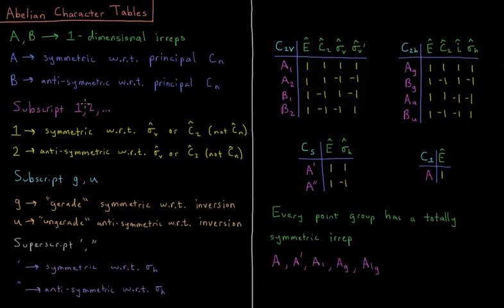If there's a subscript 1 or 2, that generally indicates a 1 is symmetric with respect to either sigma V or C2, if that C2 is not the principal axis, CN, or anti-symmetric with respect to that operation. So for sigma V, A1 positive, A2 negative, B1 positive, B2 negative.